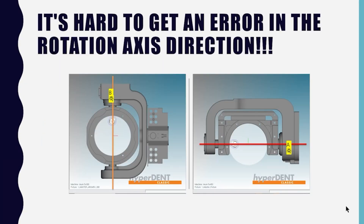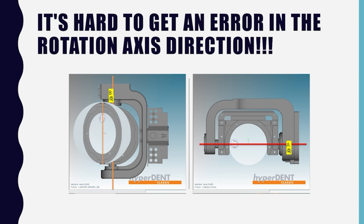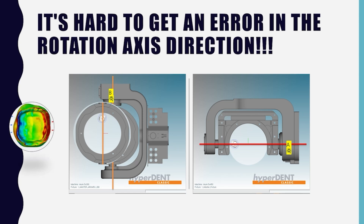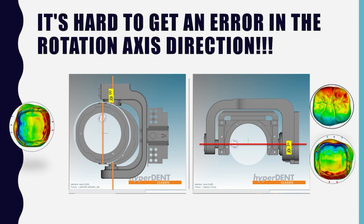Here is one useful tip. It's theoretically impossible to make errors in the direction of the axis of rotation. Therefore, machining the crown with the root center of the crown in the direction of the rotation axis can significantly reduce the machining error of the adjacent surface, even if the axis is misaligned. The crown will still fit because the error in the adjacent plane is not big. This is very useful because you only need to adjust the error expressed in the occlusal plane.